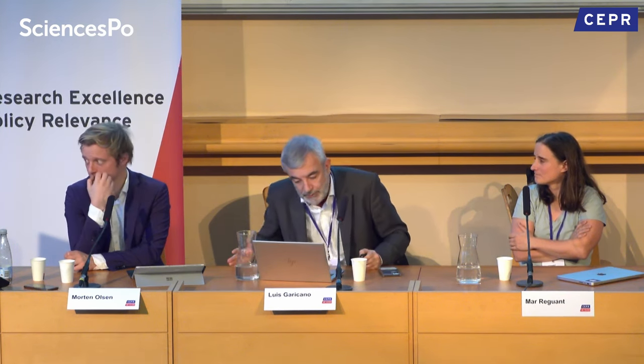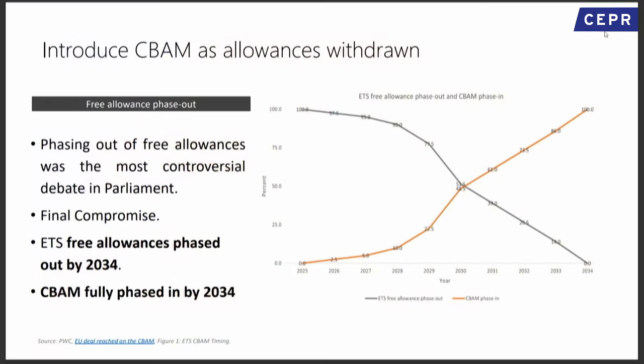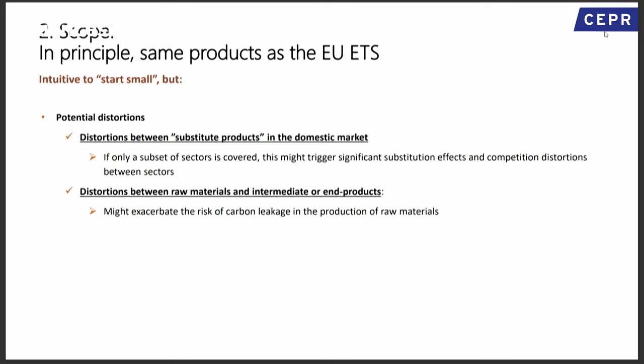The final result is not bad. It was a compromise but moved forward. The phasing out of free allowances happens exactly simultaneously with the CBAM phasing in. For me, whether that's 2032 or 2034 isn't the big deal — the big deal is that we have a good system, and I think it's not a bad system.